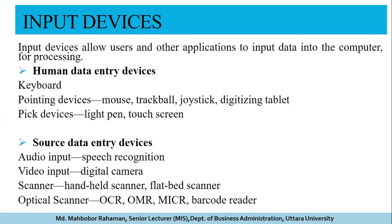For example, with a digital camera you just turn it on and then stop the recording — human interacts only at those two points. Source data input devices include digital camera, speech recognition, speaker, OCR, MICR, OMR, barcode reader, scanner, handheld scanner, and flatbed scanner. In human data entry devices, human interacts at each and every step.